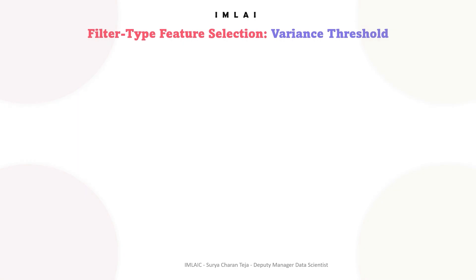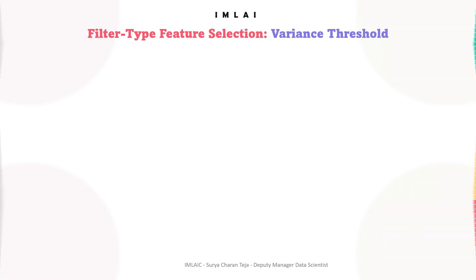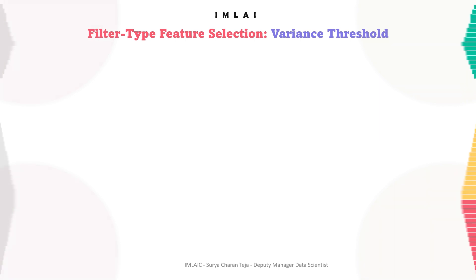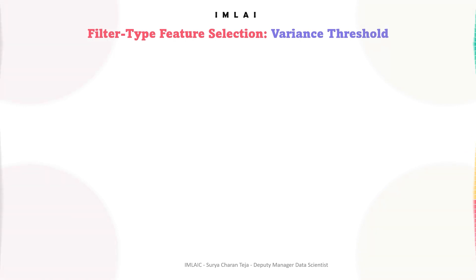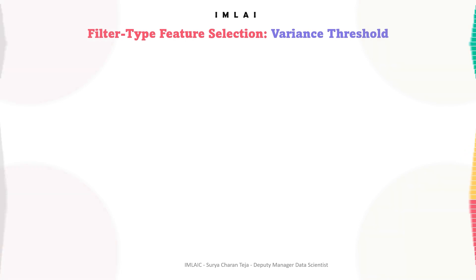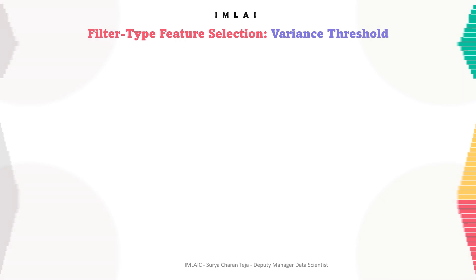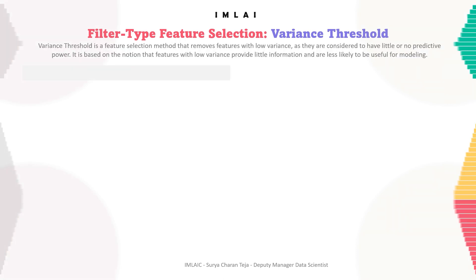Now let's look into one example where we can demonstrate the uses of variance threshold for feature selection. This example applies a variance threshold for text classification. Let's get into that.